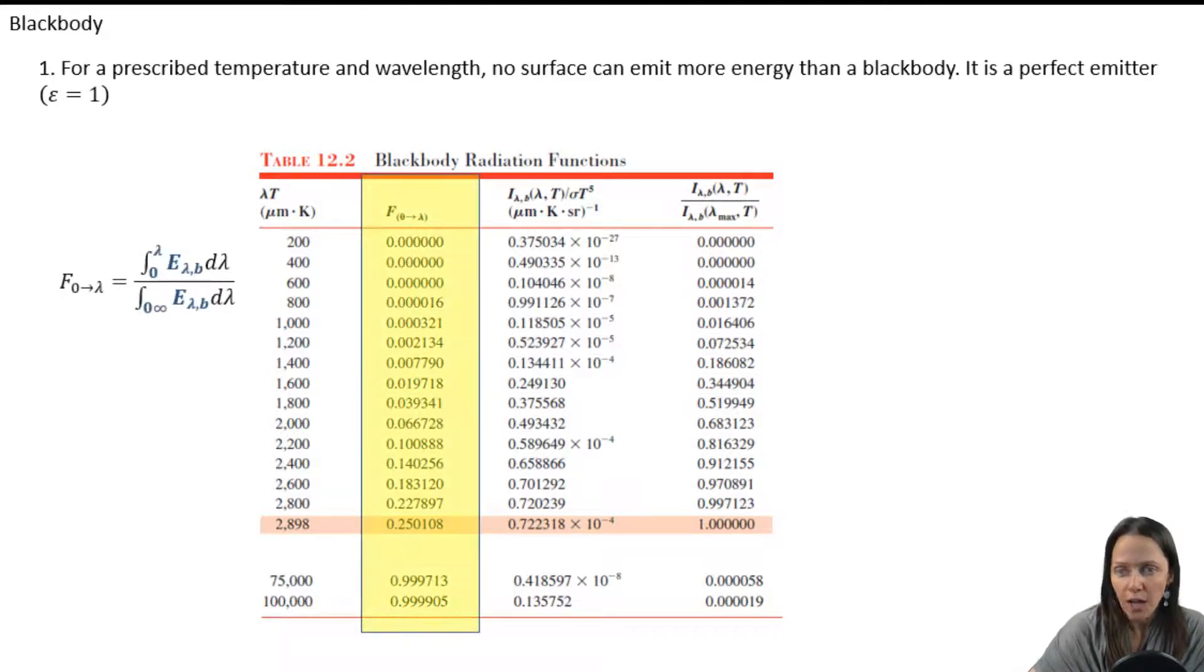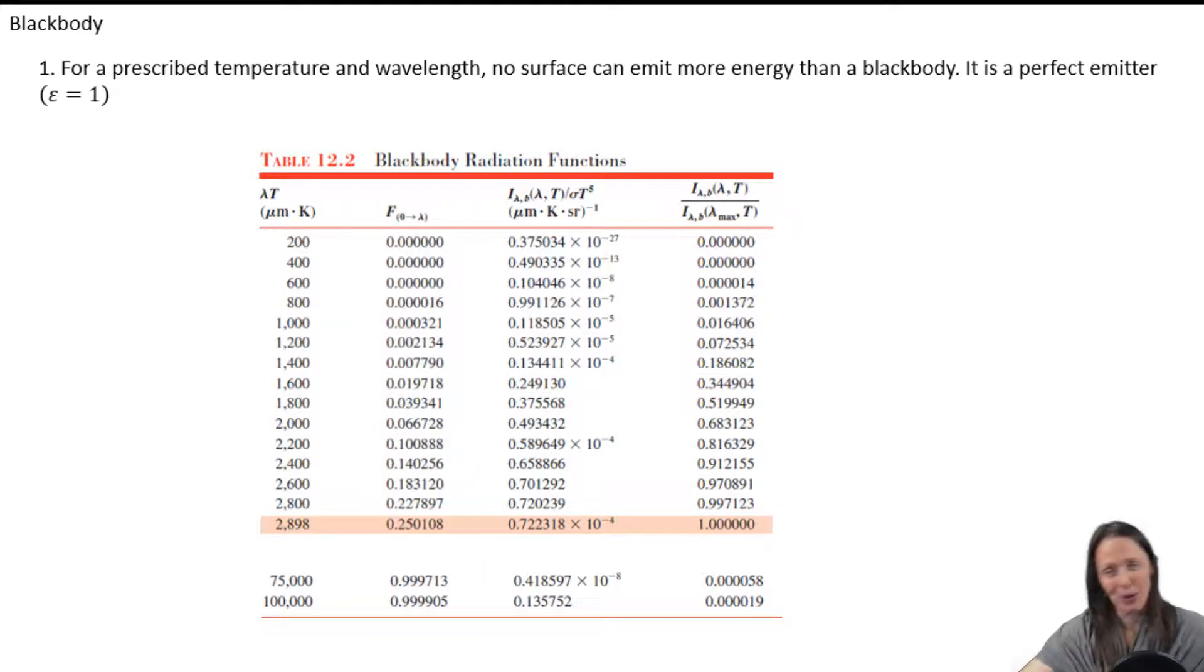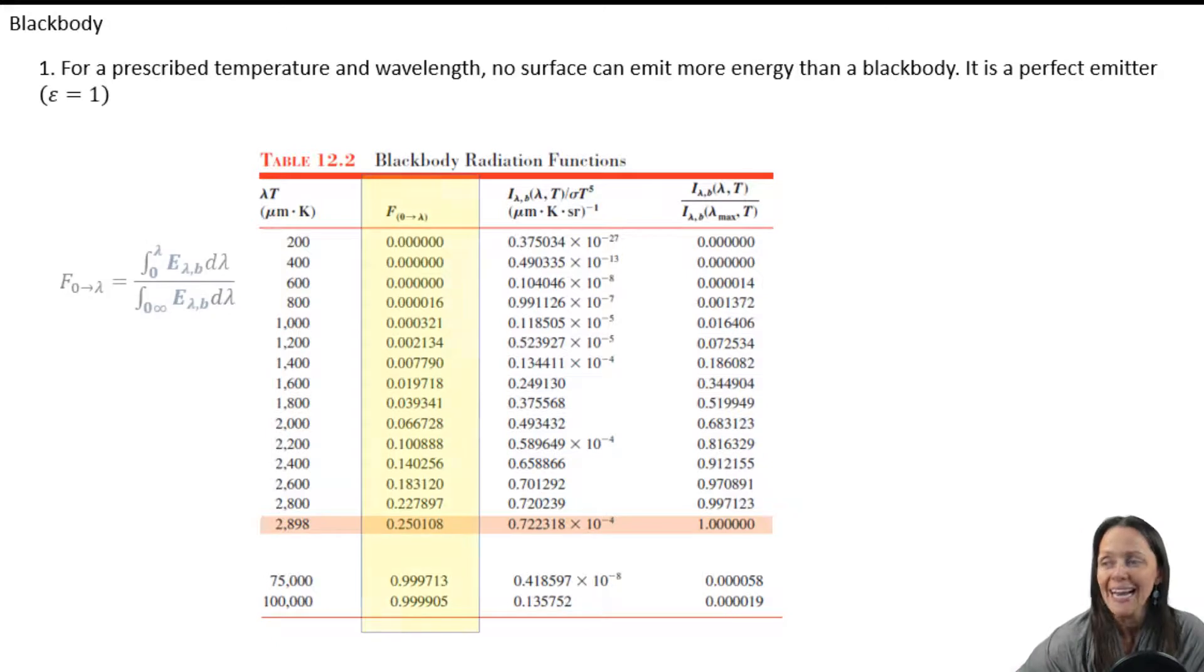And we can see how this will help us figure out that spectral emissive power of a black body at a given temperature between two wavelengths. That first column is just the wavelength times the temperature in Kelvin. And the second column is the fraction of emission between a wavelength of zero and a wavelength of lambda. And of course, that denominator in the equation, since it was integrated over all the wavelengths, is just that sigma TS to the fourth power.